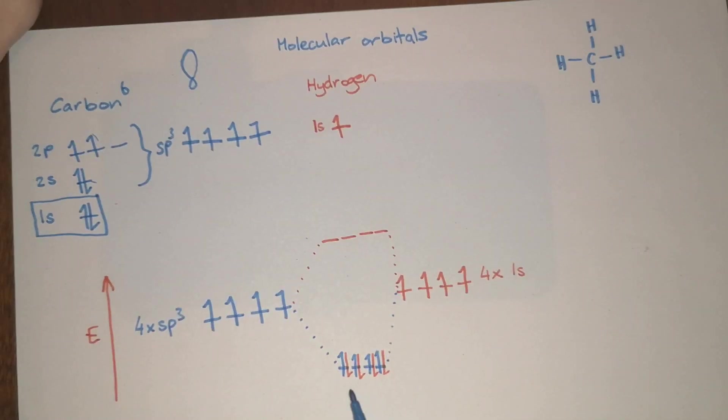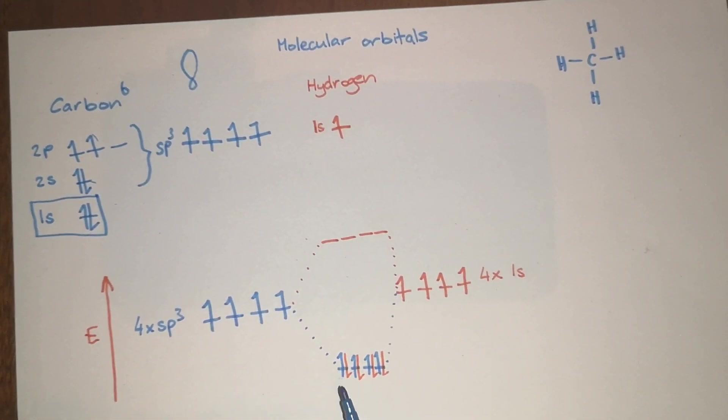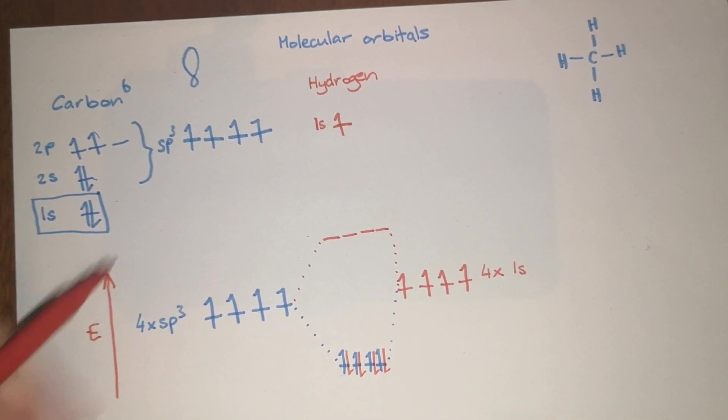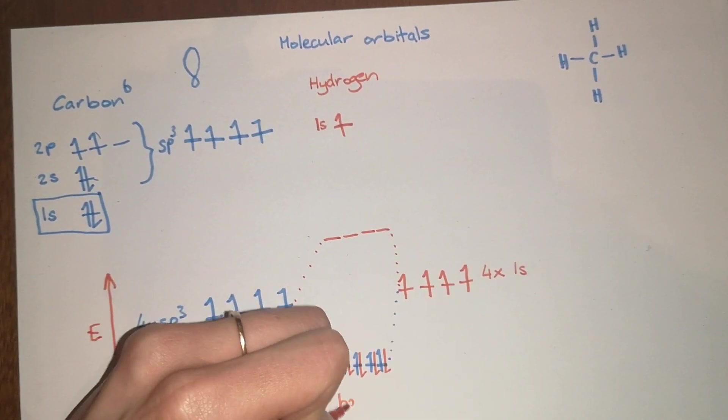The electrons always have to be in the opposite direction to each other. So what you have here is your bonding orbitals.